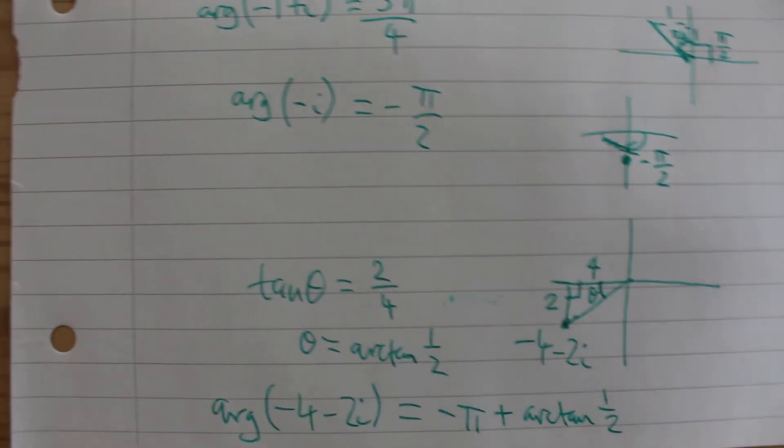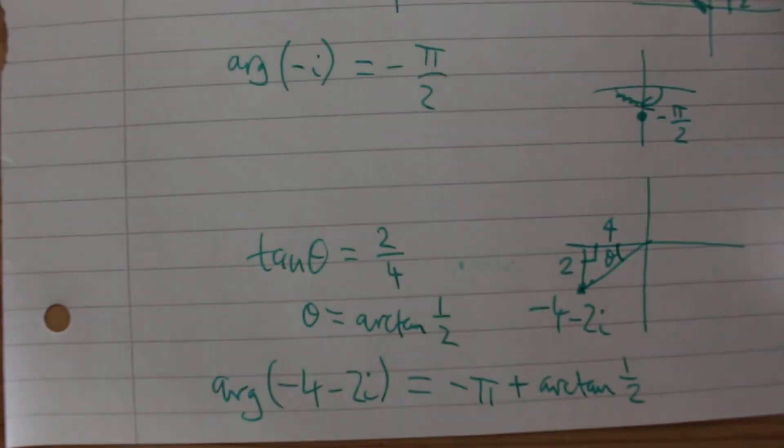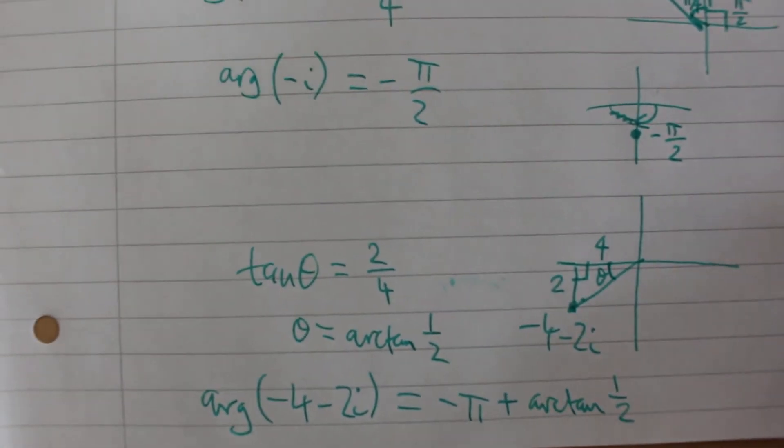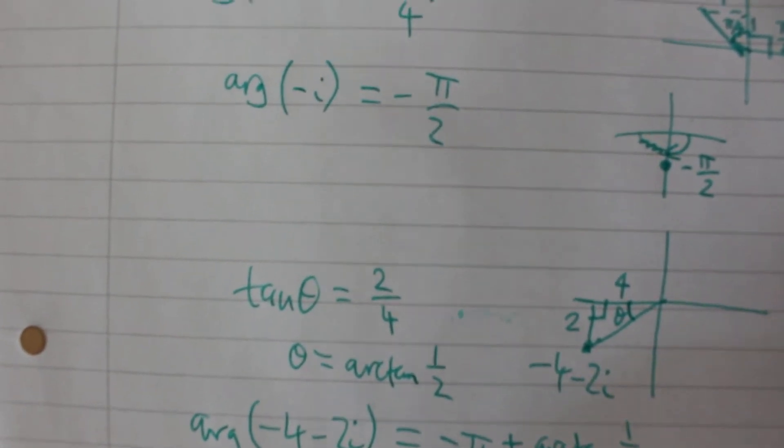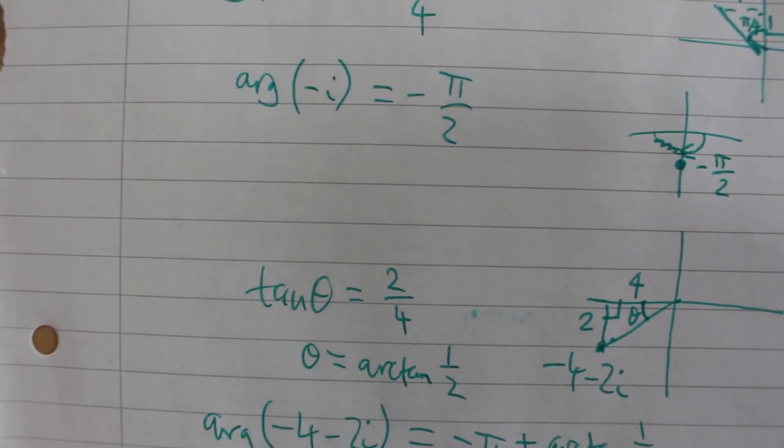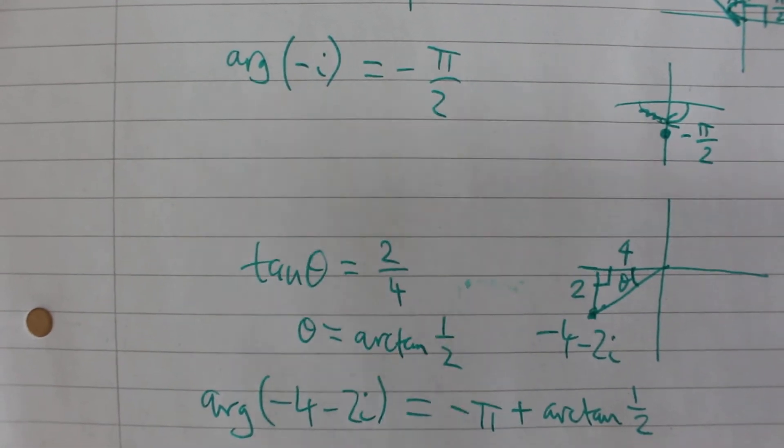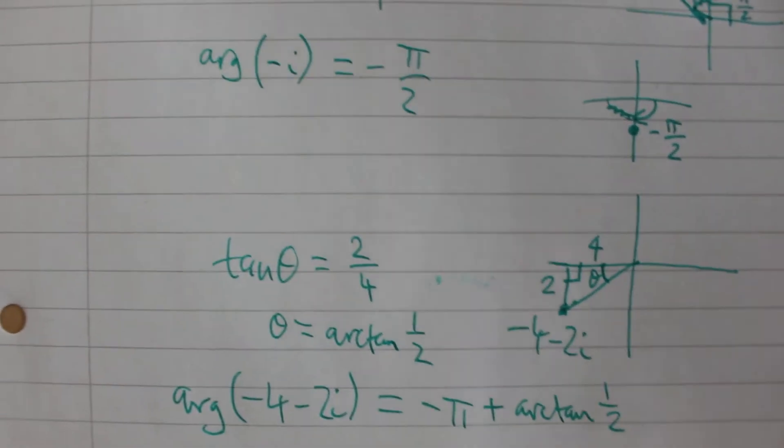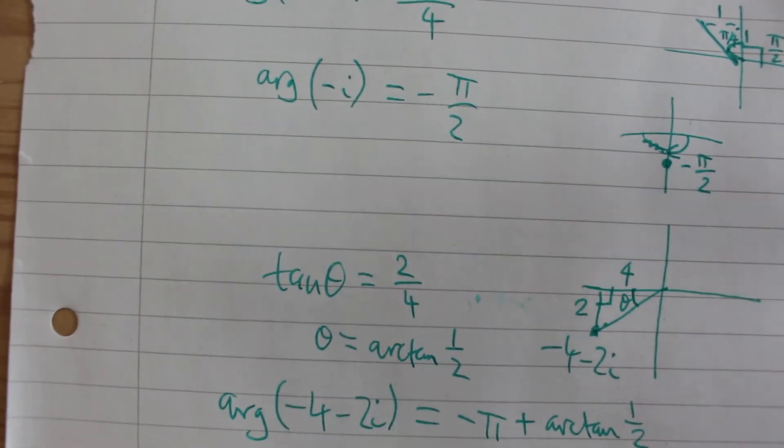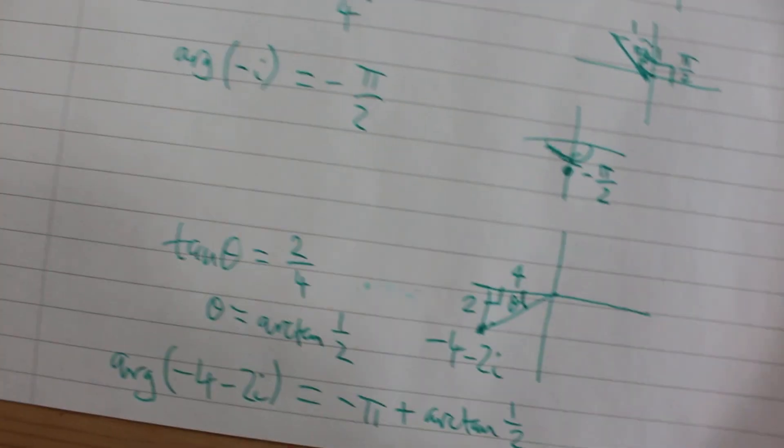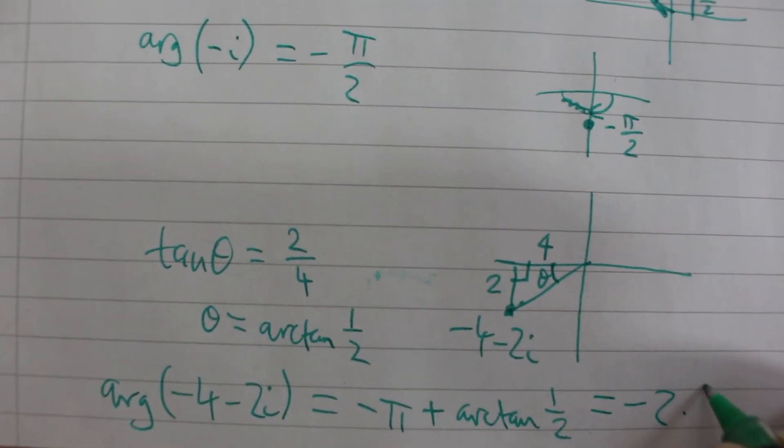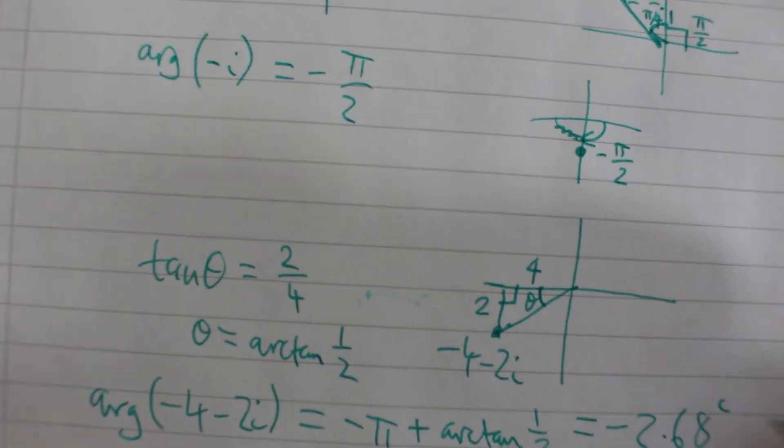Let's work it out. Arc tan of a half is 0.46. If we subtract pi we obtain minus 2.68 to 3 significant figures. So that's the principal argument of minus 4 minus 2i.